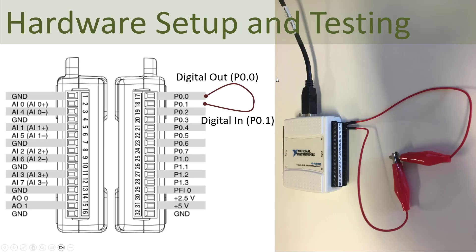Let's start with the hardware setup and how we are going to test it. I'm going to use two digital pins — setting the first one as a digital output and the next one as a digital input. Then I just wire a wire from the output to the input. So when in my LabVIEW application I set this one to be true, I should be able to read the same value here — this should be true.